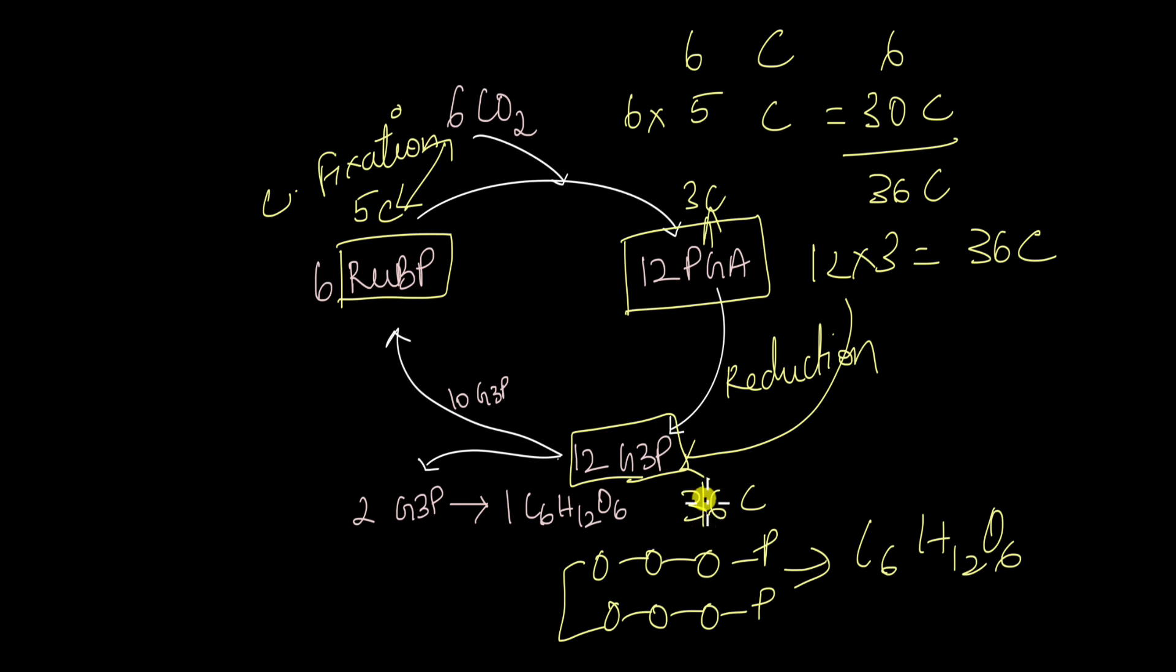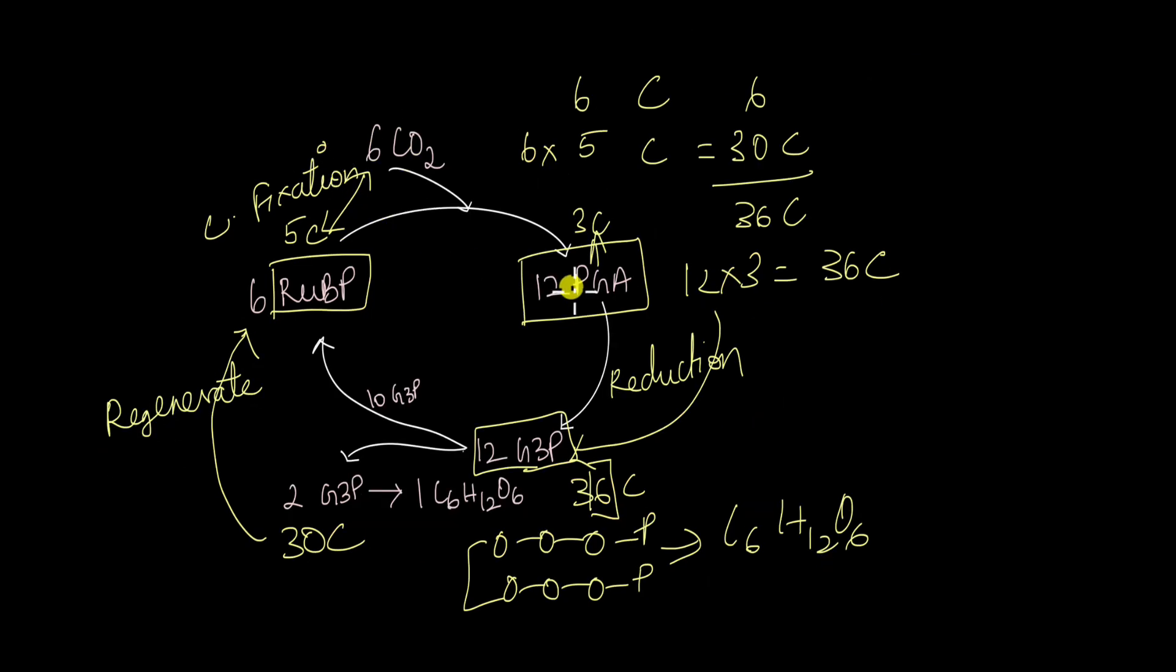So if you remove six carbon atoms from this 36 carbon atoms, totally you will get 30 carbon atoms, which are what is needed to regenerate this six molecules of RUBP. We started off with 30 carbon atoms in RUBP and we're ending up with again 30 carbon atoms to regenerate RUBP. So this is what a balanced Calvin cycle reaction looks like.